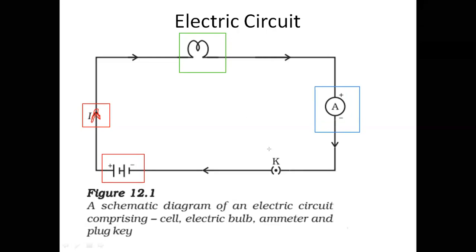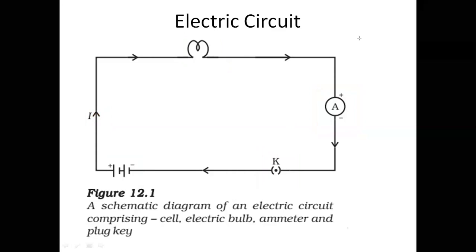The last device marked in green is the key — also called a plug key, or in short, a switch. The switch you have at home to turn a device on or off is the plug key. So for today, remember that all these things — battery, wires, bulb, ammeter, and plug key — make a normal electric circuit. You can see the definition: closed and continuous path. Is this circuit closed? It starts here, goes through the bulb, goes to the ammeter, goes to the plug key, and ends again at the same battery. So it is a closed and continuous circuit — that is the electric circuit.